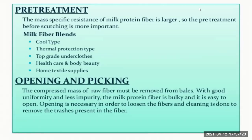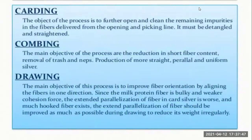The next step is opening and picking. The compressed mass of raw fiber must be removed from bales with good uniformity and less impurity. The milk protein fiber is bulky and easy to open. Opening is necessary to loosen the fibers, and cleaning is done to remove the trash present in the fiber.